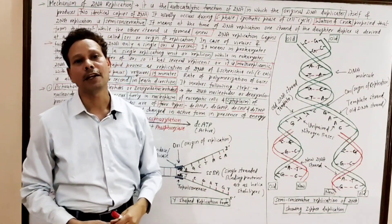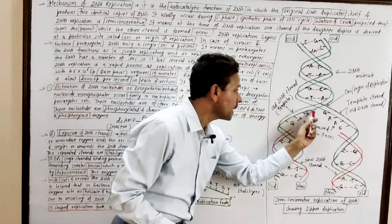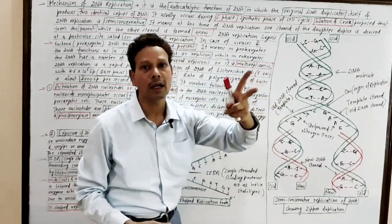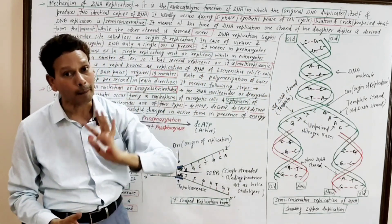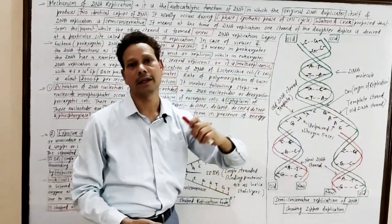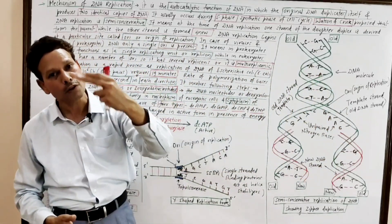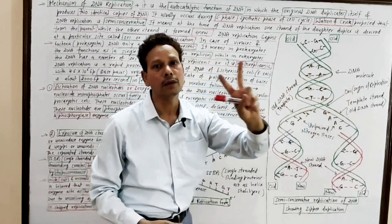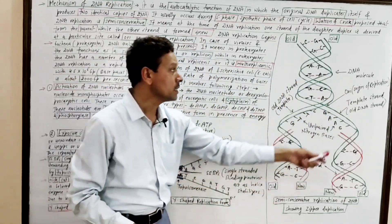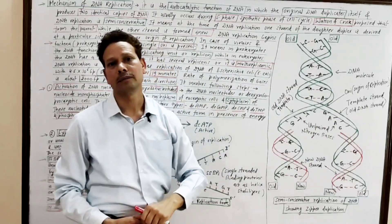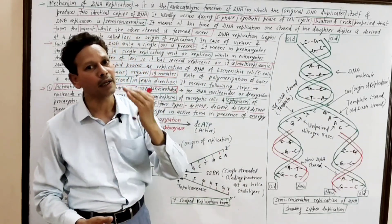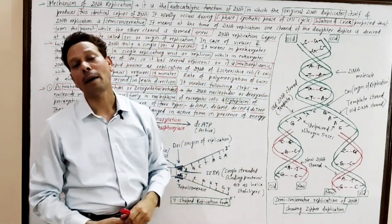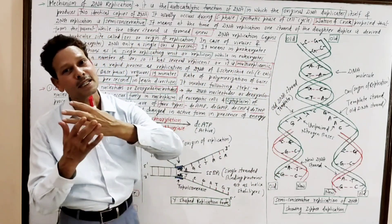DNA replication begins at a particular site called the ori, or origin of replication. In the case of prokaryotic DNA — in viruses and bacteria — there is only one ori, meaning the entire DNA acts as monorepliconic, a single unit of replication.